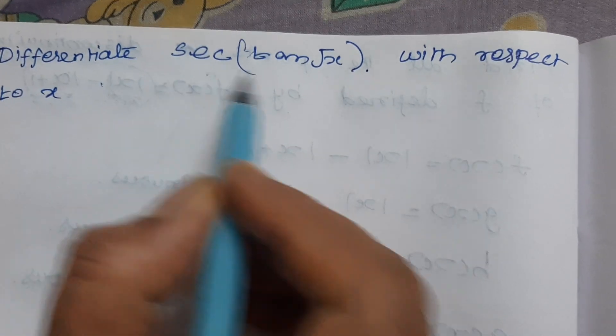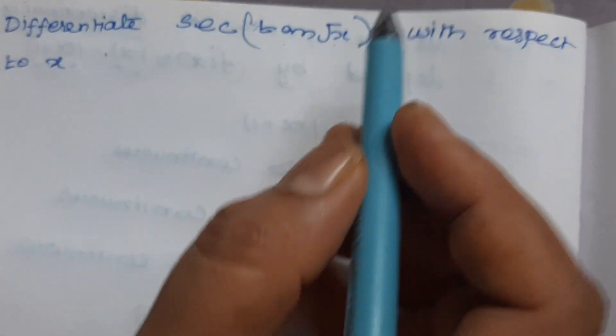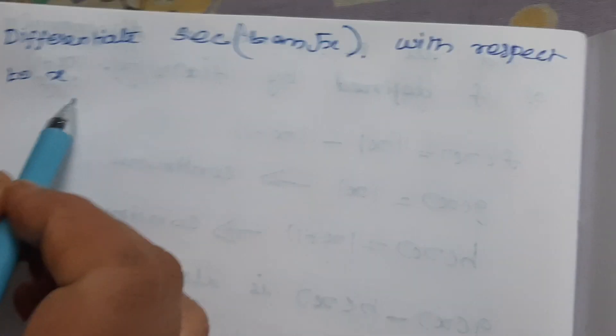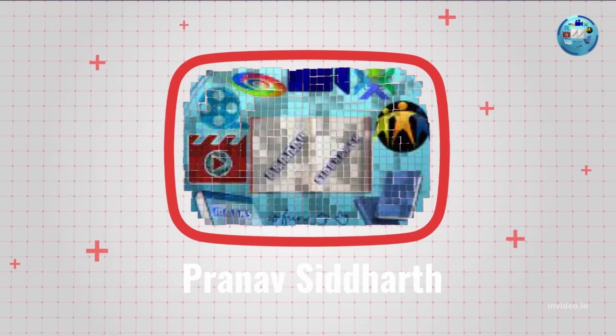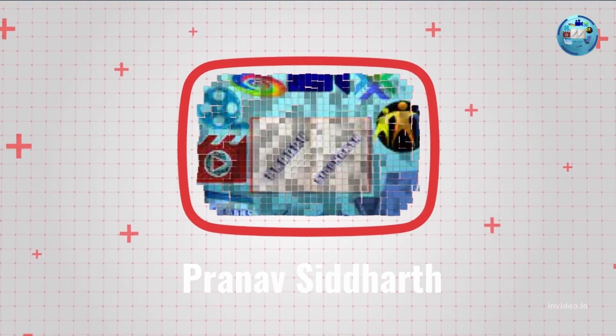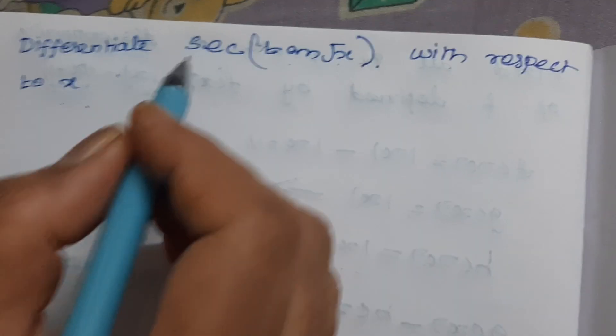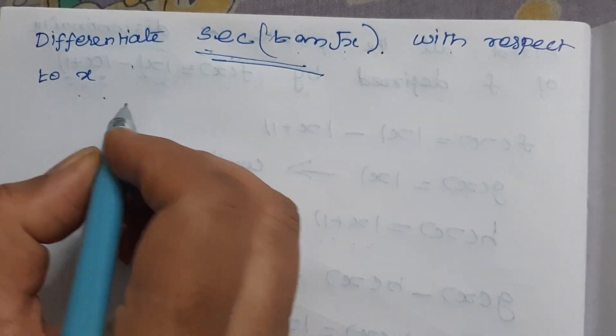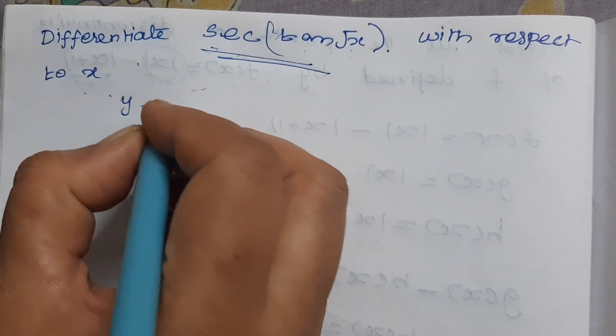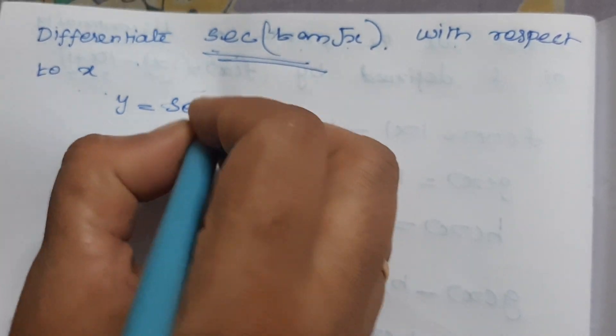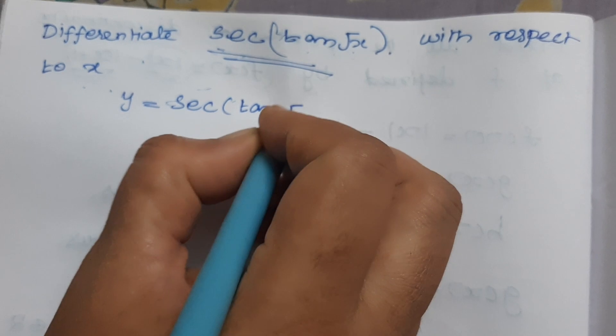Differentiate sec(tan√x) with respect to x. First we have to take this function as y, so y equals sec(tan√x).